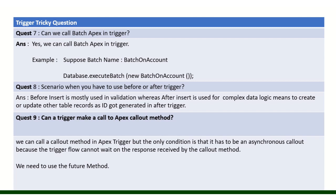Can a trigger make a callout to an Apex class? Yes, but it must be asynchronous because we can't wait for the response. That is why we use the future method. It is mandatory to use a future method when making an Apex callout from a trigger.